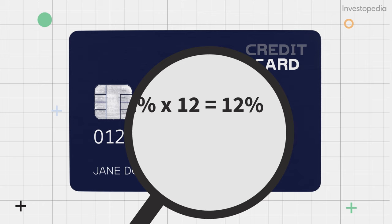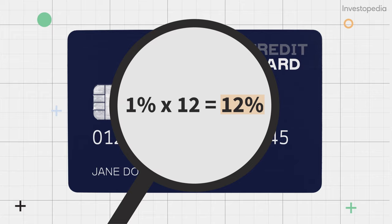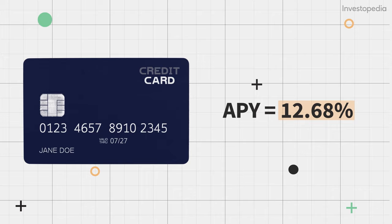As an example, say a credit card company is charging 1% interest each month. The APR is 12%, because 1% times 12 months equals 12%. Conversely, the APY is 12.68% due to the monthly compounded interest.